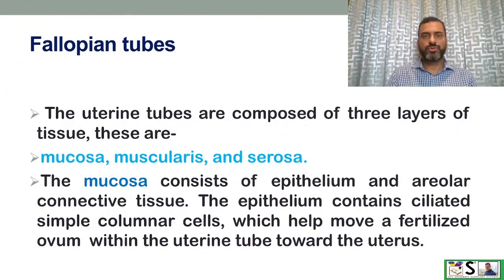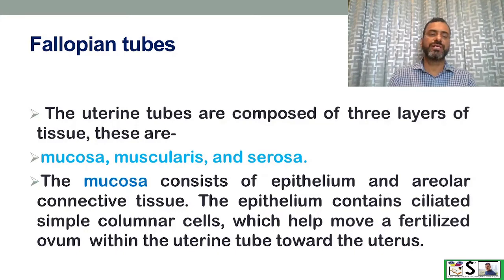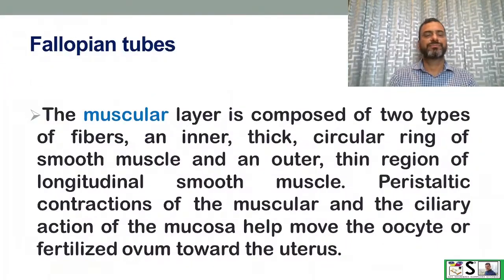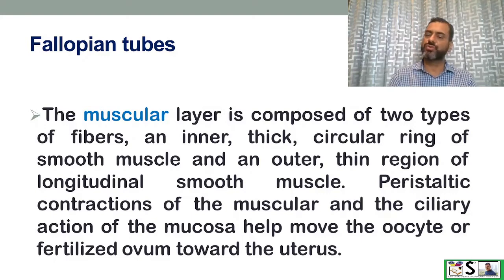The uterine tubes are composed of three layers: mucosa, muscular layer, and serosa. The mucosa consists of epithelium and areolar connective tissue, with ciliated simple columnar cells that help move the fertilized ovum toward the uterus. The muscular layer is composed of an inner circular ring of smooth muscle and outer longitudinal muscle fibers. Peristaltic contractions of the muscular layer and ciliary action of the mucosa help move the oocyte or fertilized ovum toward the uterus.